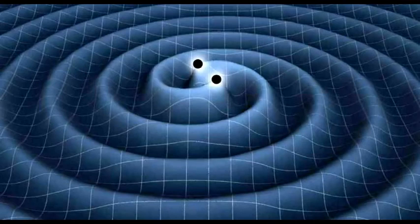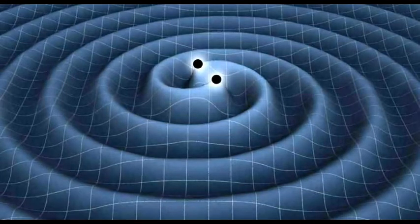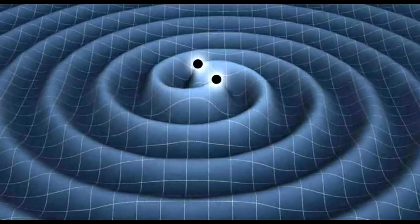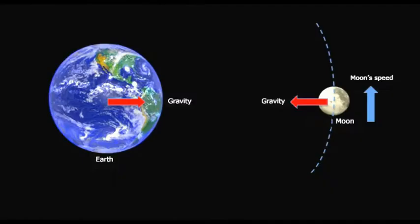We all know about gravity. When something is really heavy, the size of a planet for example, it pulls other objects towards it. That's why we don't float off Earth - it's holding us down. Technically, we're also pulling Earth toward us.